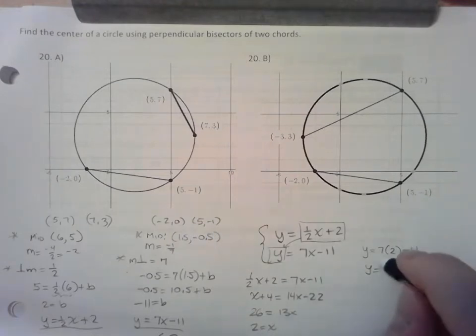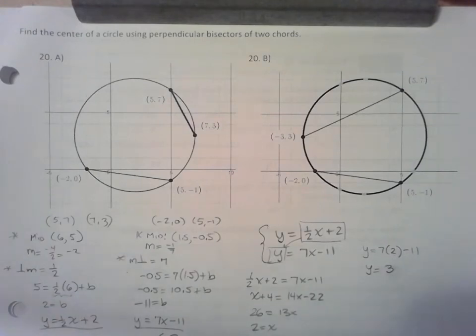I meant to say 3. 14 take away 11 is 3. So the center of our circle is (2, 3).